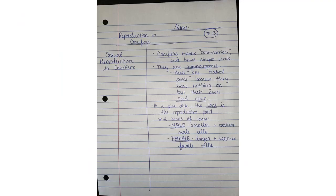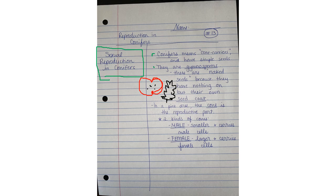If you're doing your handwritten notes, the first general topic is sexual reproduction in conifers. The term conifer means cone carriers, and they have very simple seeds. They are also gymnosperms, which means they are naked seeds, because they have nothing on but their own seed coat. Draw an example like the seeds inside of the apple and then maybe just the pine cone — that will help you remember that gymnosperms are uncovered while angiosperms are covered. In a pine tree, the cone is the reproductive part of the plant, and there are two kinds of cones: the male, which is smaller and carries the male cells (pollen), and the female cones, which are larger and carry the female cells.